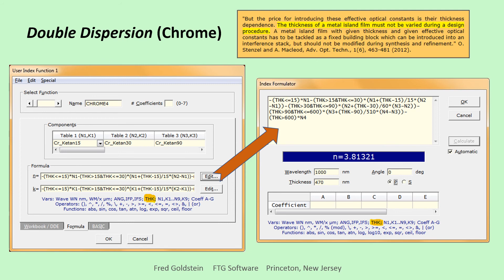As stated in the quotation at the upper right, as N and K for metals depends on thickness, we are instructed to design with fixed metal thickness and vary only other layers. As double dispersion removes that restriction, the possibility of varying metal layer thickness is now available. We emphasize possibility because we assume that if N and K are known at thicknesses of 20 nanometers and 40 nanometers, interpolated values at 30 nanometers will be halfway in between.